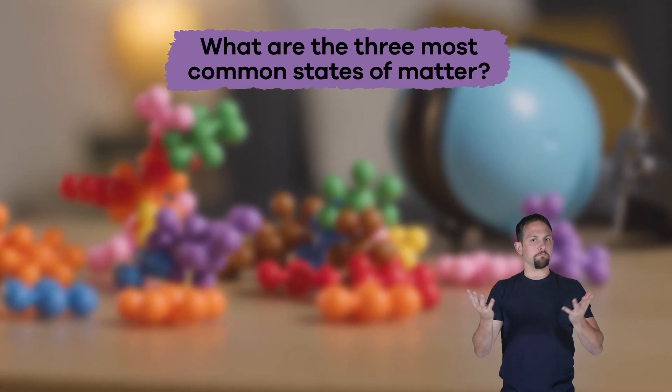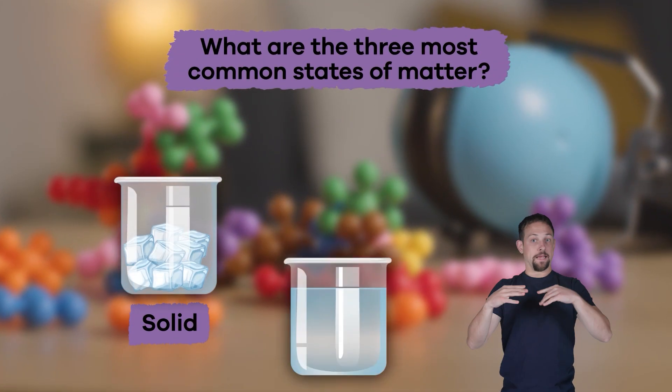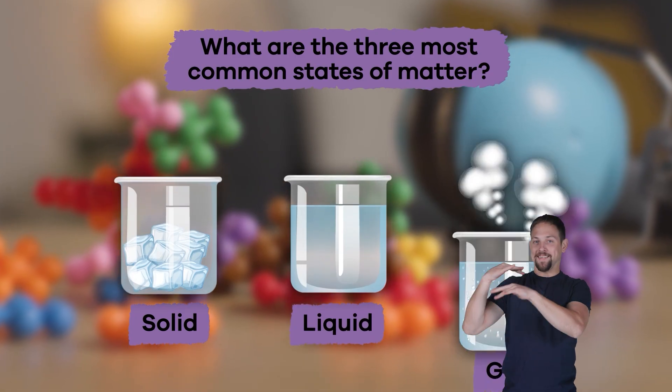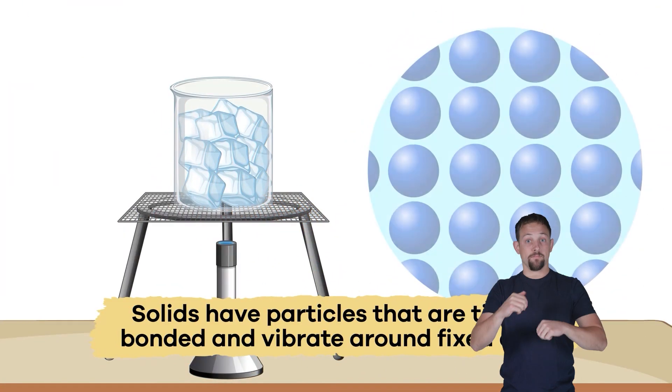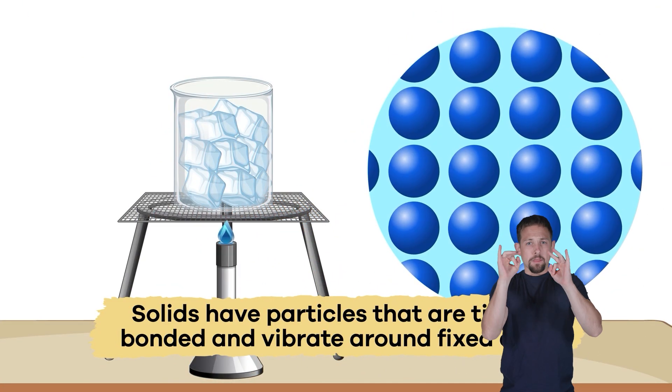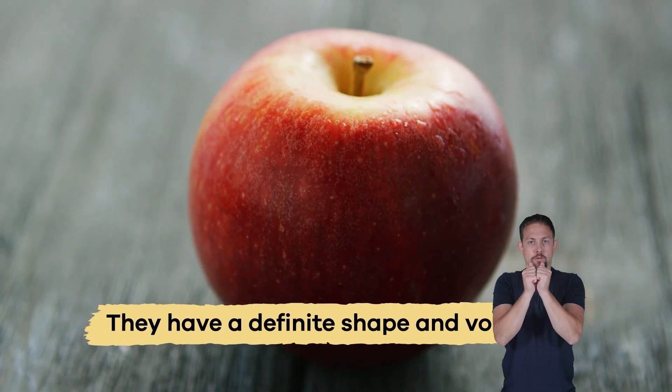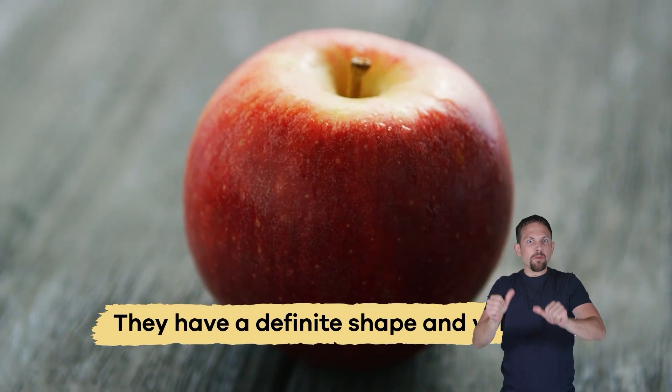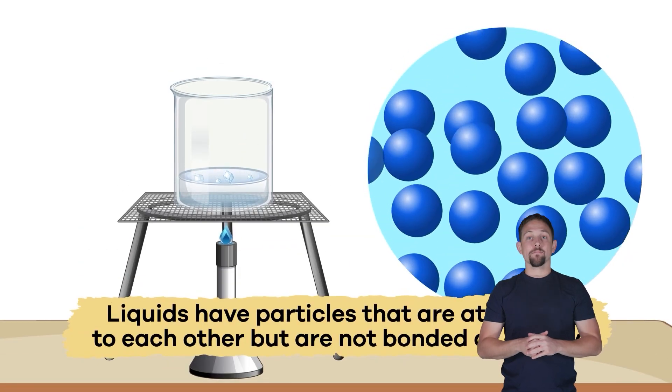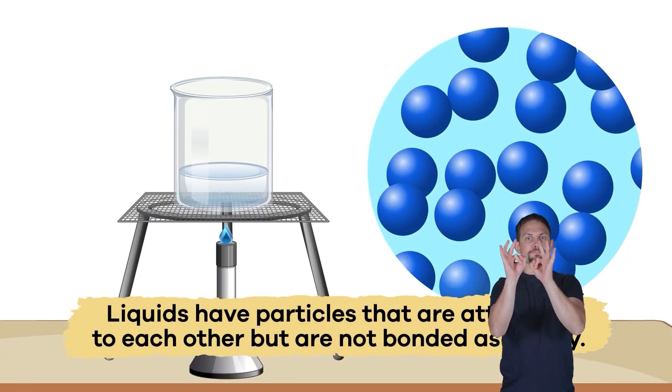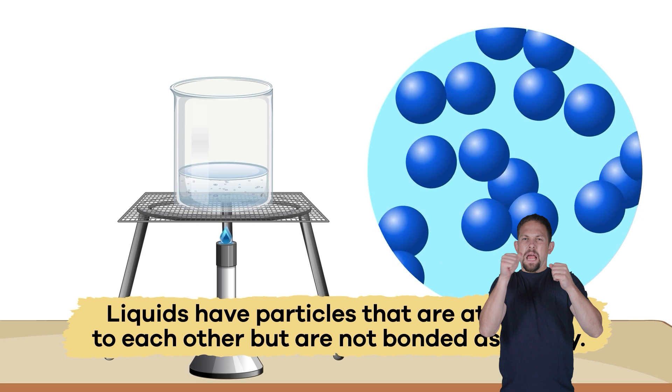What are the three most common states of matter? Solid, liquid, and gas. Solids have particles that are tightly bonded and vibrate around fixed axes. They have a definite shape and volume. Liquids have particles that are attracted to each other but are not bonded as tightly. They are free to move over each other.